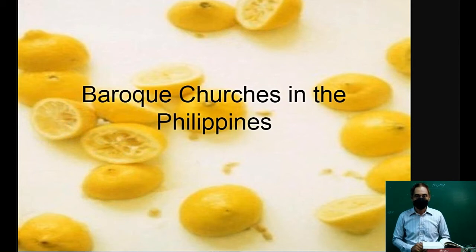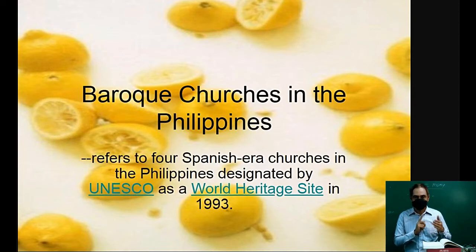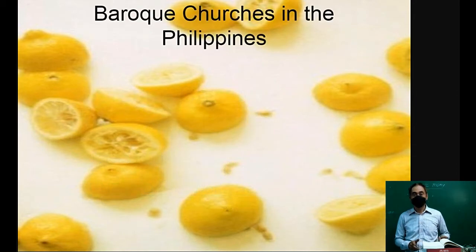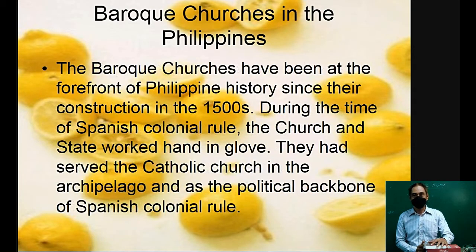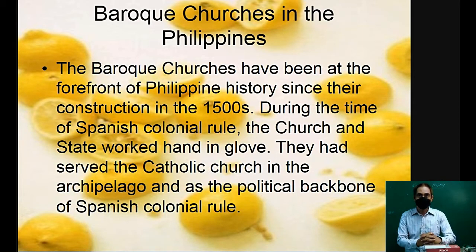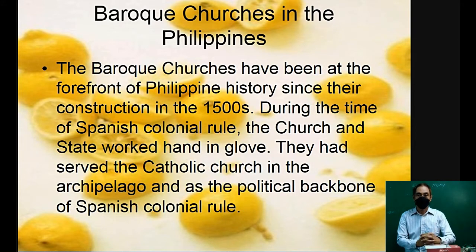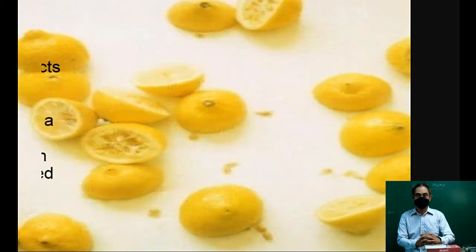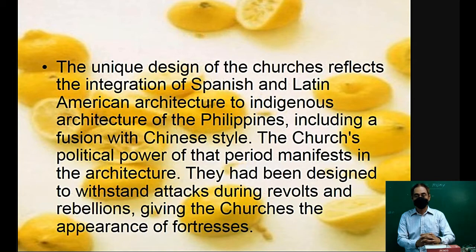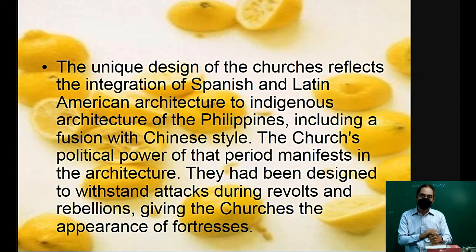The Baroque churches of the Philippines refers to four Spanish-era churches designated by UNESCO as a World Heritage Site in 1993. The Baroque churches have been at the forefront of Philippine history since their construction in the 1500s, during the time of Spanish colonial rule, when the church and the state worked hand in glove. They served the Catholic Church in the archipelago and as the political backbone of Spanish colonial rule. The unique design of the churches reflects the integration of Spanish, Latin American, and indigenous architecture of the Philippines, including a fusion of Chinese styles.